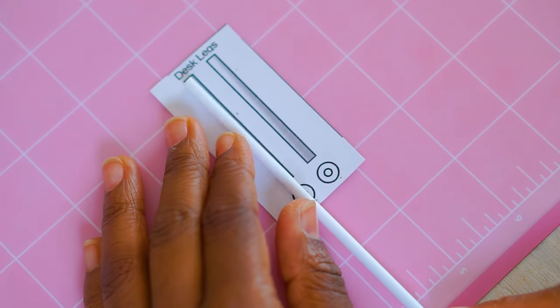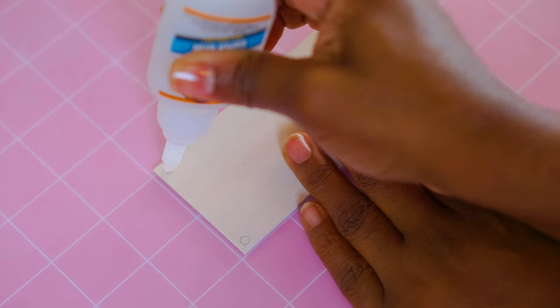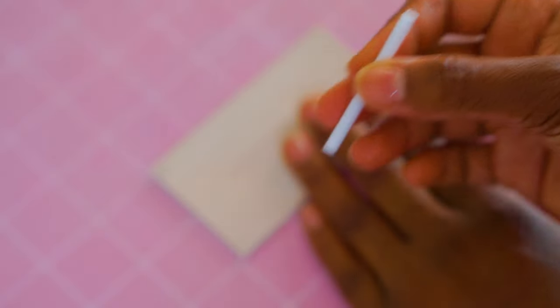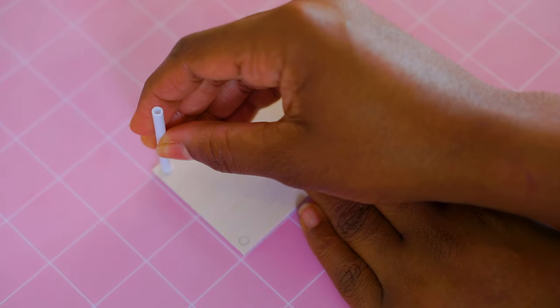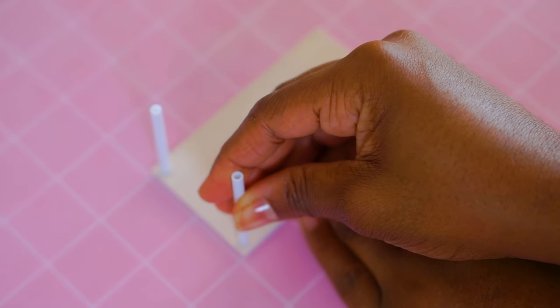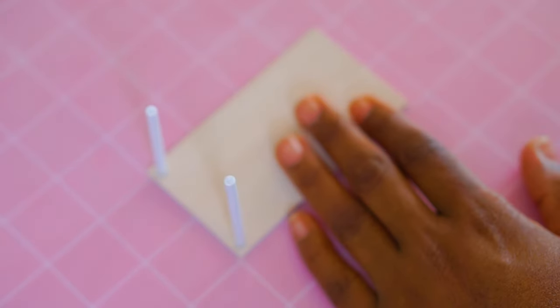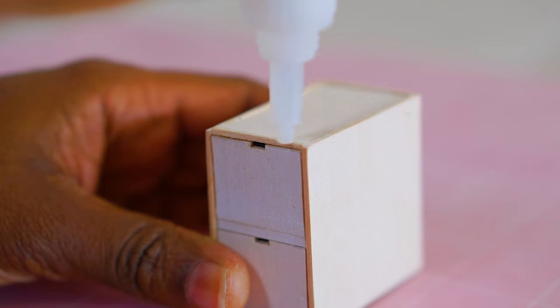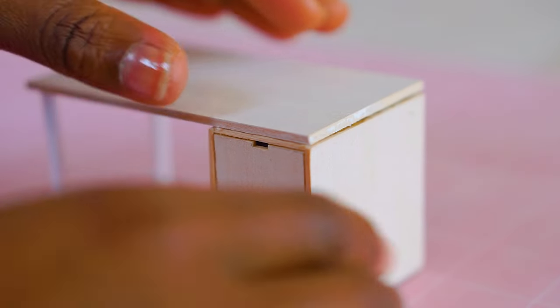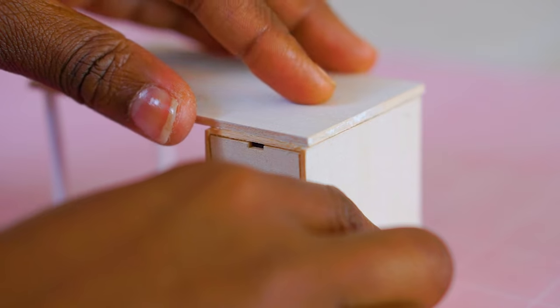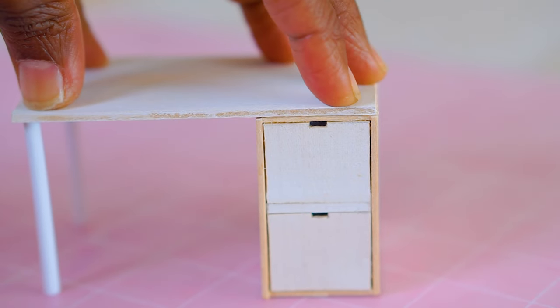I'm using some white plastic tubes that I found in my drawer of bits and bobs, and I cut those up to be the legs of the desk that I'm just super gluing to the bottom side of the top of the desk. And then I'm gluing the top of the desk down to the drawers that I just made.